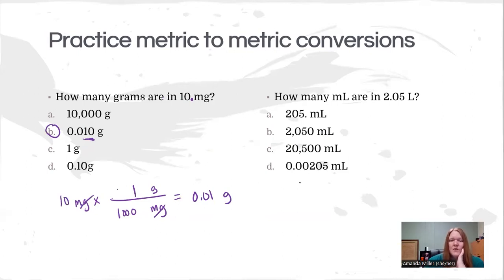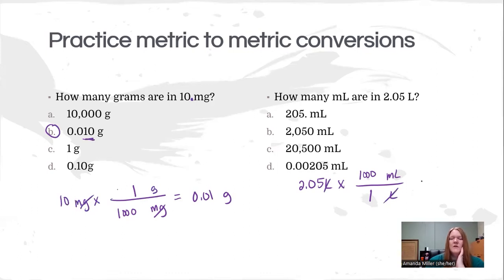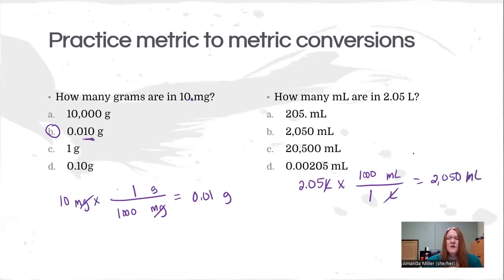For 2.05 liters, we want to find out how many milliliters this is — something we'll do in lab pretty often. It's the same relationship: one to a thousand. The liter is big so that's one, and there are 1000 milliliters in one liter. Liters cancel, and in the calculator 2.05 times 1000 gives 2050 milliliters.